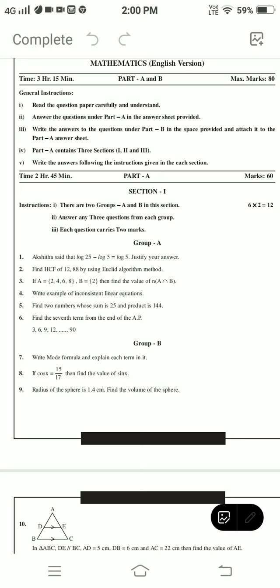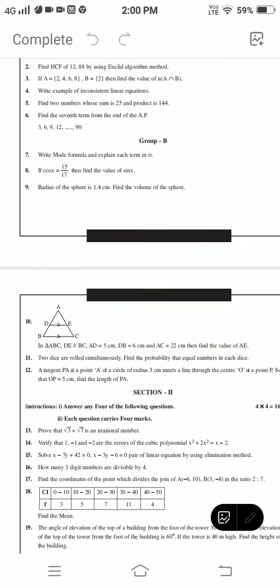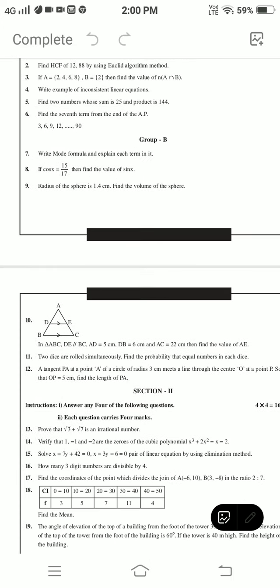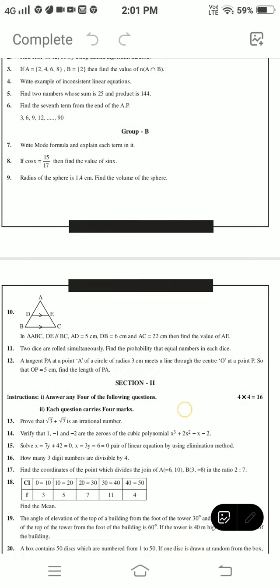Group B: Write Mohr's formula and explain each term in it. If cos x equals 15/17, then find the value of sin x. Radius of sphere is 1.4 centimeters, find the volume of sphere. In triangle ABC, DE parallel to BC, AD equals 5 cm, DB equals 6 cm, AC equals 22 cm, then find the value of AE. Two dice are rolled simultaneously, find the probability that equal numbers appear on each die. A tangent PA at a point A of a circle of radius 3 cm meets a line through center O at point P so that OP equals 5 cm. Find the length of PA.